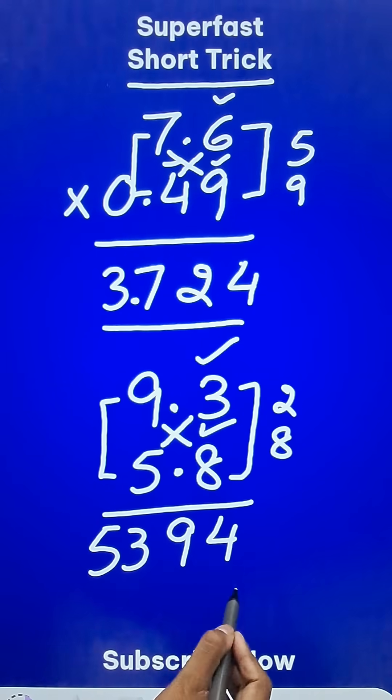1 decimal, 2 decimals makes it 53.94 as the final product.